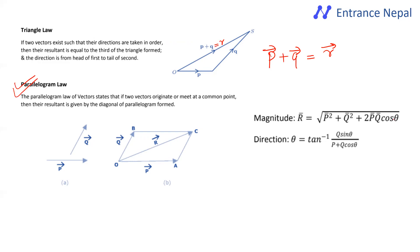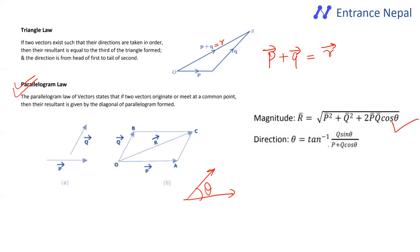For two vectors, the direction and the angle between them is theta. So we have the formula for the resultant. The resultant formula: R equals the square root of P² plus Q² plus 2PQ cos theta. For the direction, you get tan inverse of Q sine theta divided by P plus Q cos theta.